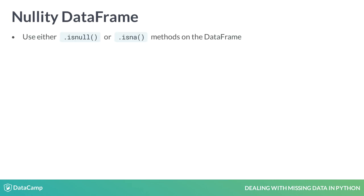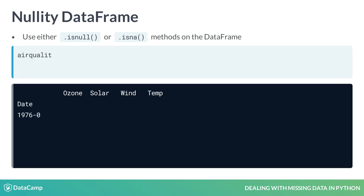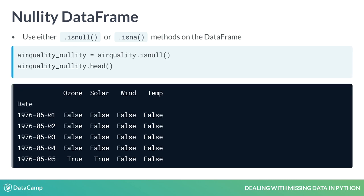We can either use the isNull or isNA methods on the dataframe to obtain the nullity of a dataframe — both methods are the same. They return a dataframe of true and false, where true implies missing and false implies not missing.